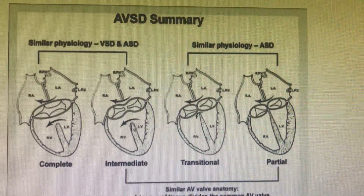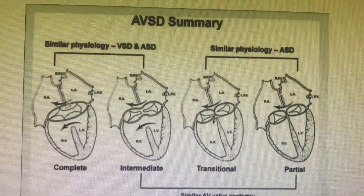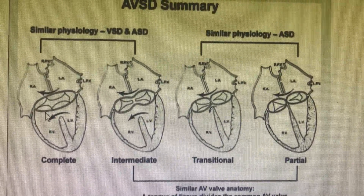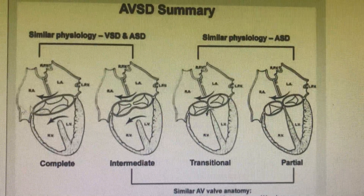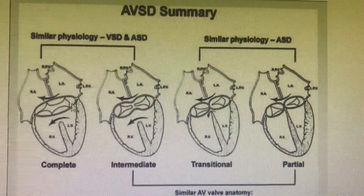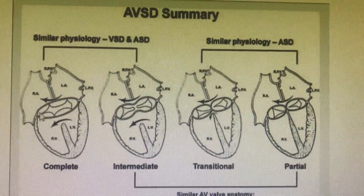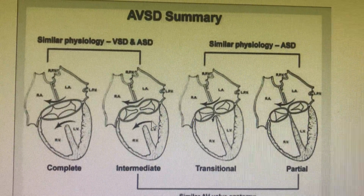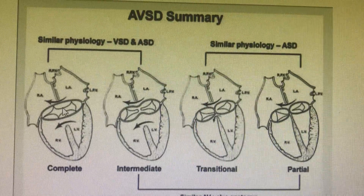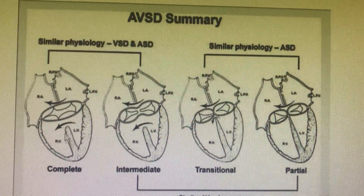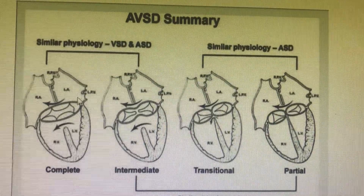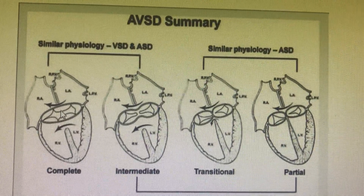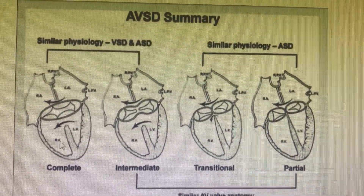In the complete form of AV canal septal defect, there is a complete primum ASD and complete inlet VSD. There are only two bridging leaflets — anterior and posterior — plus one lateral leaflet on the left side and two lateral leaflets on the right side, because the left side has two leaflets and the right side has three. So in the complete form there are five leaflets total, whereas in the intermediate form there are six leaflets. In the complete form, there is one anterior bridging leaflet and one posterior bridging leaflet with absolutely no communication or fusion between them — this is called the complete form of AVSD.